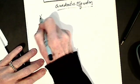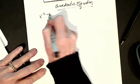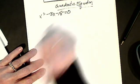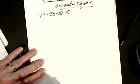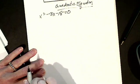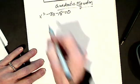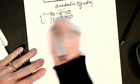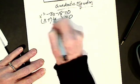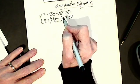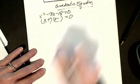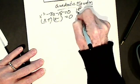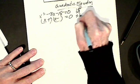So if I have one like this: x squared minus 3x minus 18 equals 0. It looks like something that should be factored, so I factor it. I have x, x — plus, minus. I write my factors of 18: 1 times 18, 2 times 9, or 3 times 6.